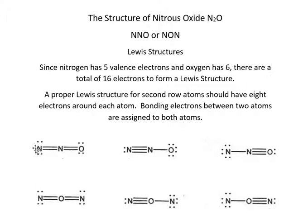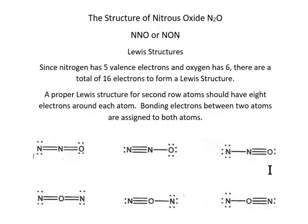If we look at this nitrogen on the left, we count all the electrons — the bonding electrons — and assign them to each nitrogen. So each nitrogen has eight electrons and oxygen has eight. That's true for all six of these structures. So we have double bond–double bond, triple bond–single bond, and single bond–triple bond arrangements.